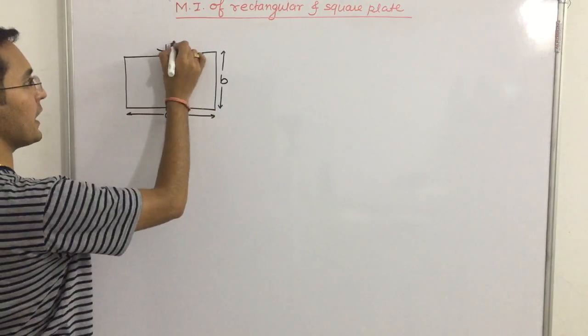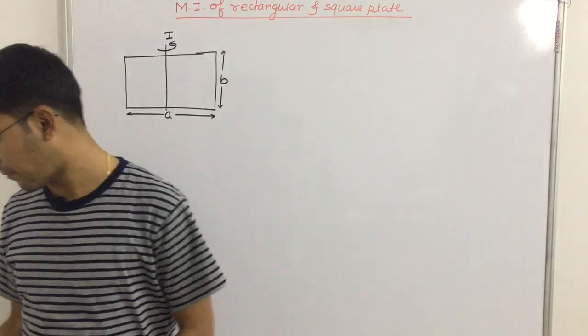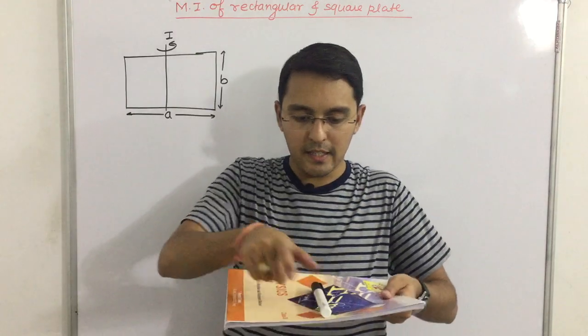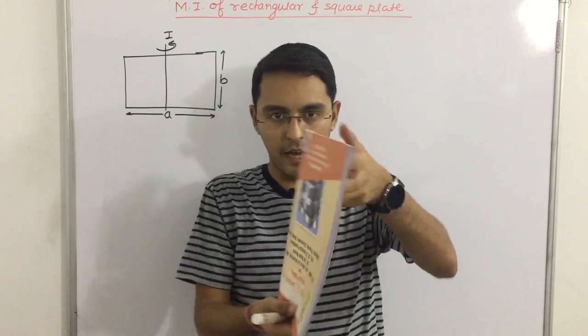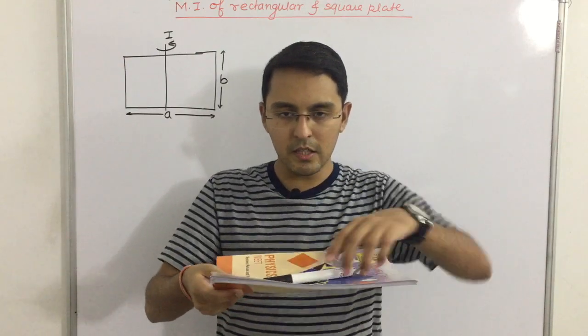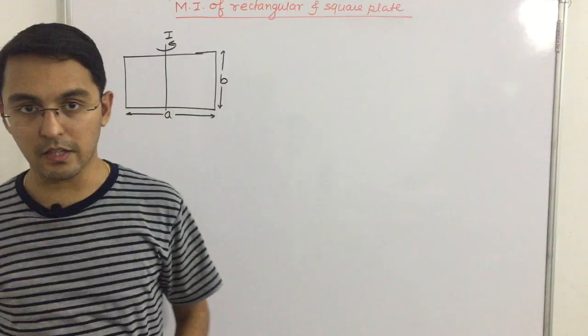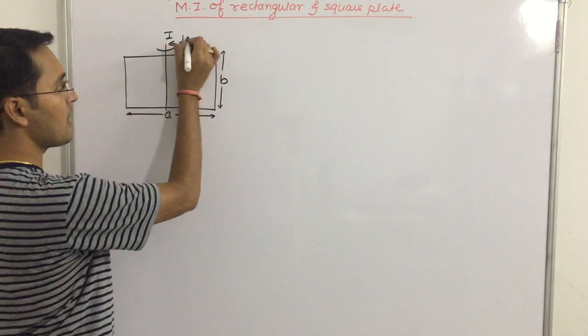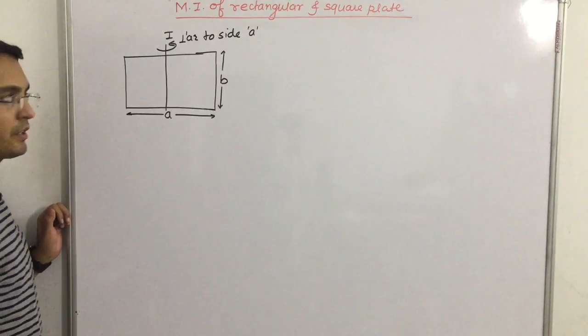And the first moment of inertia, the moment of inertia is about this axis. This rectangular plate is like this. If we have considered this axis, the rectangular plate is like this. This is perpendicular to one side. This axis is perpendicular to side A.